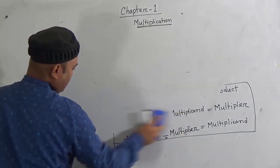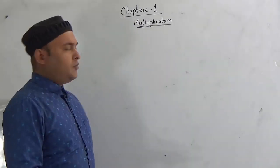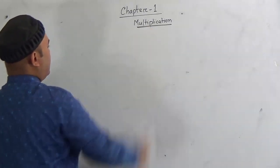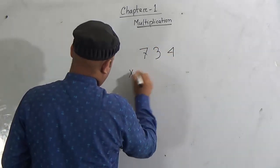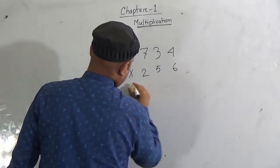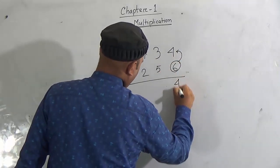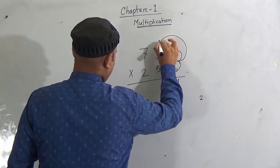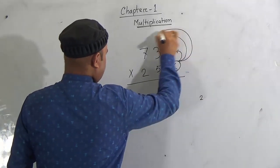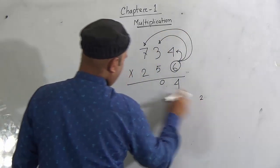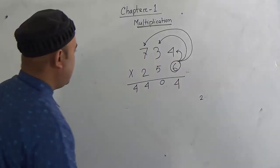Here is a note: for multiplication, it will be easy if you memorize the times tables — more and more practice of the times tables will make multiplication easy for you. Now look here: if I multiply 734 by 256, first of all we start from the ones place. We multiply 4 by 6: 4 × 6 = 24, carry 2. Then 6 × 3 = 18, plus carry 2 = 20, carry 2. Then 6 × 7 = 42, plus carry 2 = 44. So 734 multiplied by 6 gives 4404.